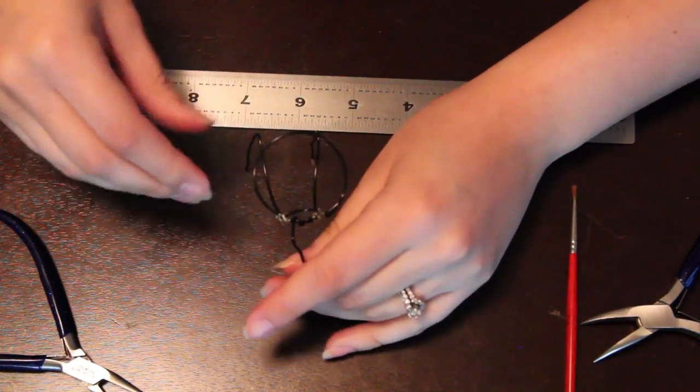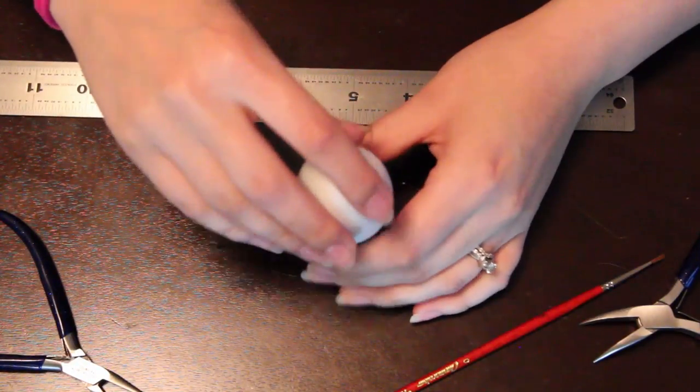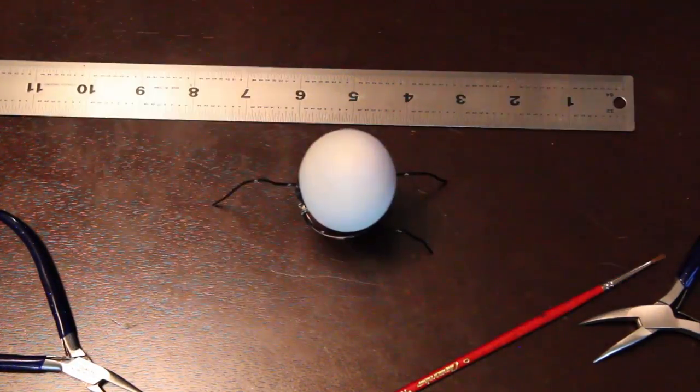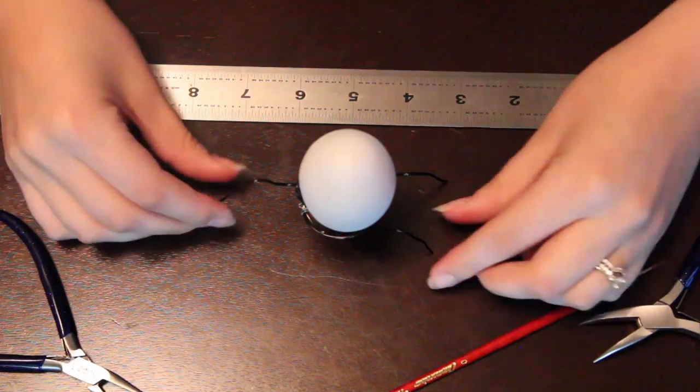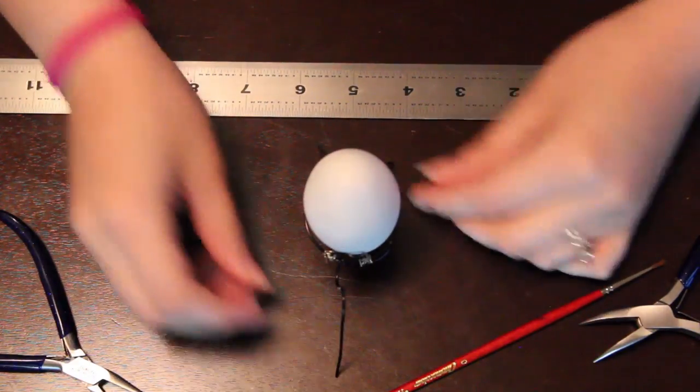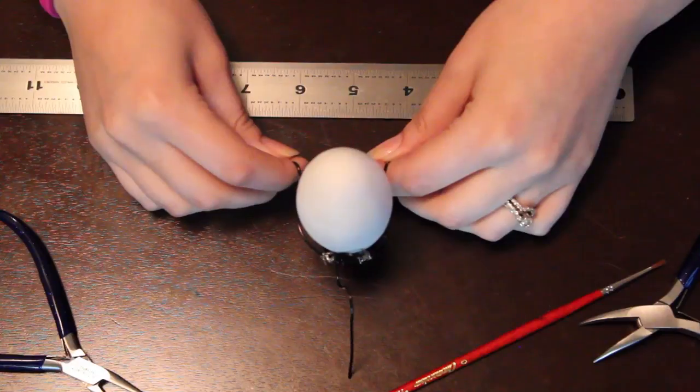So now place your egg inside, see if it's sturdy, see if it stands, see if you need to fix anything. If you need to bend any of the wires, you probably will have to. So this is what mine looks like and I'm happy with the way it looks.